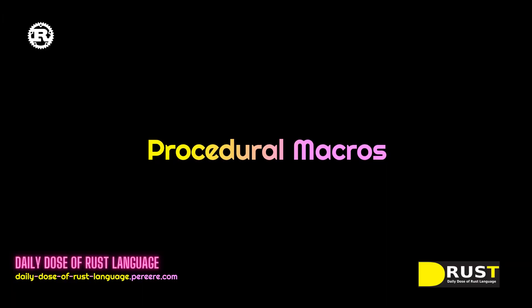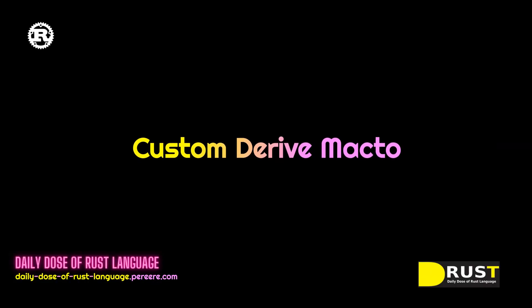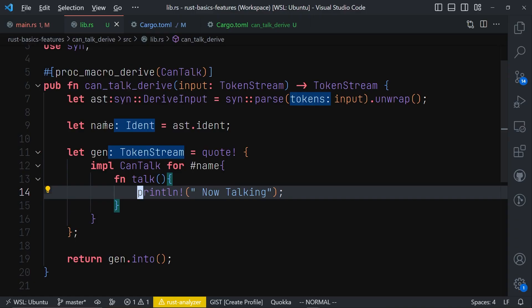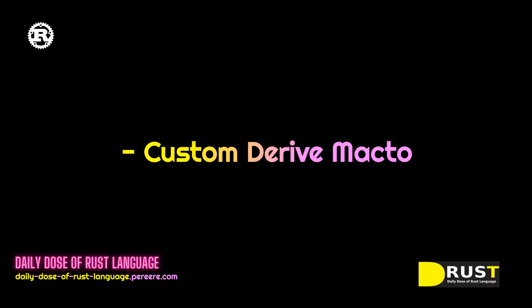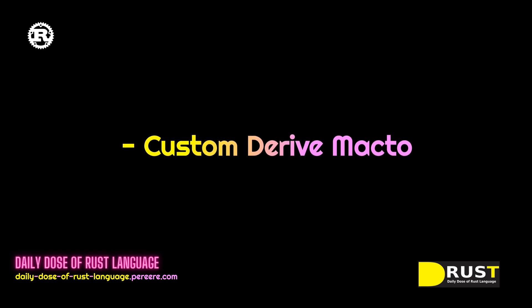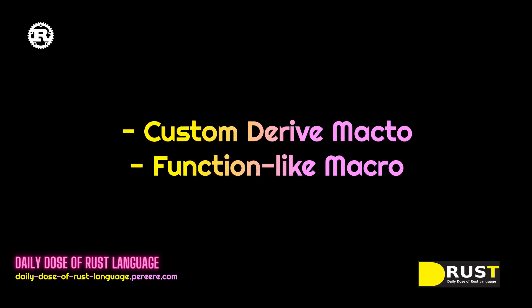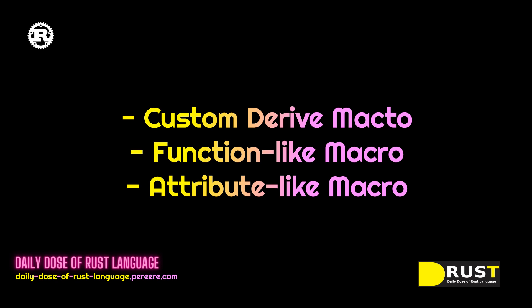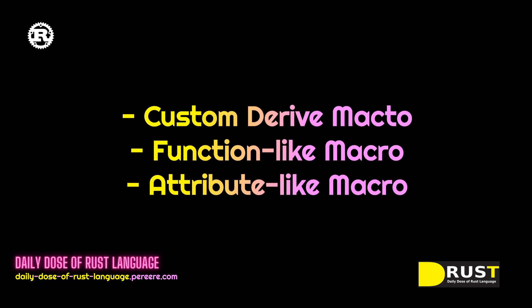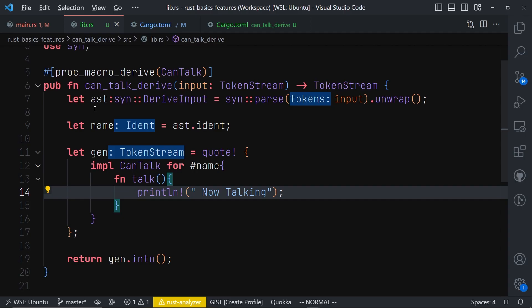In this video we're going to take a look at the other part of macros in Rust, which is the procedural macro — specifically the derive macro. There are three types of procedural macro in Rust: the derive macro, which we are going to look at today, the function-like macro, and the attribute-like macro. We'll give a full example of how to automatically implement a trait for a struct using a derive macro.